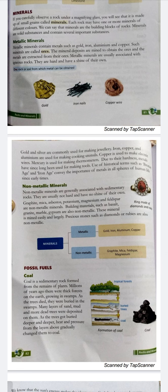Iron, copper, and aluminium are used for cooking utensils. Copper is used for making electric wire. Mercury is used for making thermometers. Metals have long been used for making tools. Historic terms such as Bronze Age and Iron Age convey the importance of metals in human life.